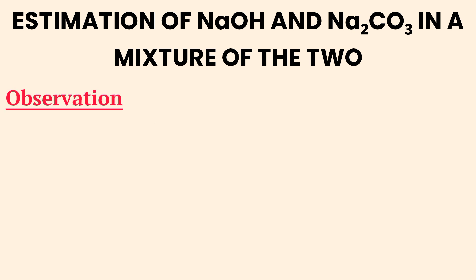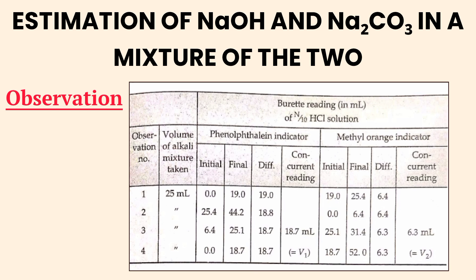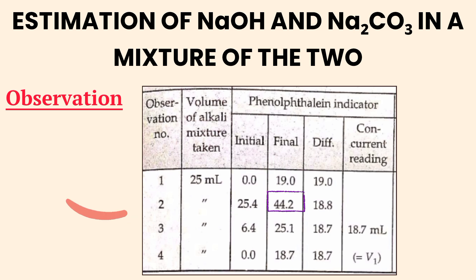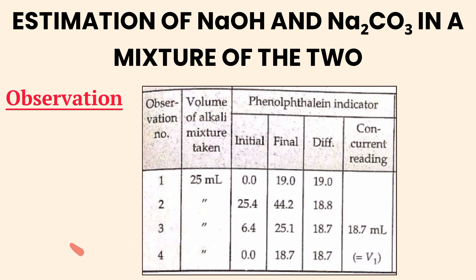Now let's understand the observation table which records the burette readings for both indicators. Phenolphthalein indicator, columns 3 to 6: 25 mL of alkali mixture was used. Observation 1: Initial 0.0, Final 19.0, Difference 19.0 mL. Observation 2: 25.4 to 44.2 = 18.8 mL. Observation 3: 6.4 to 25.1 = 18.7 mL. Observation 4: 0.0 to 18.7 = 18.7 mL. The average volume of acid used with phenolphthalein indicator is 18.7 mL.